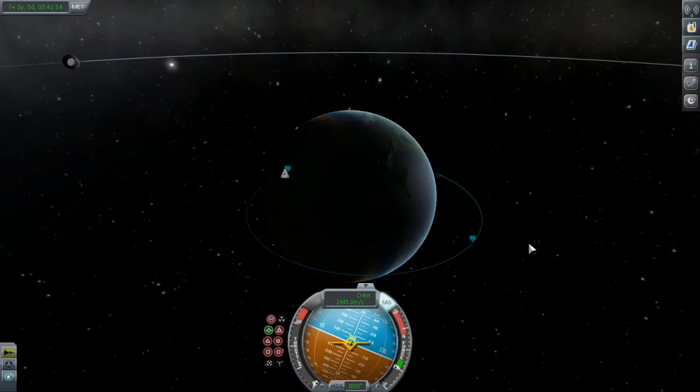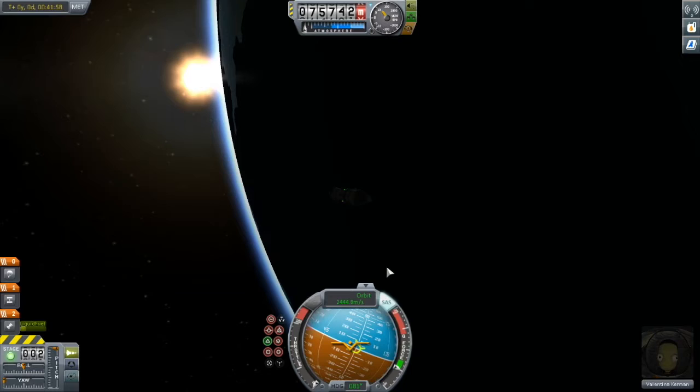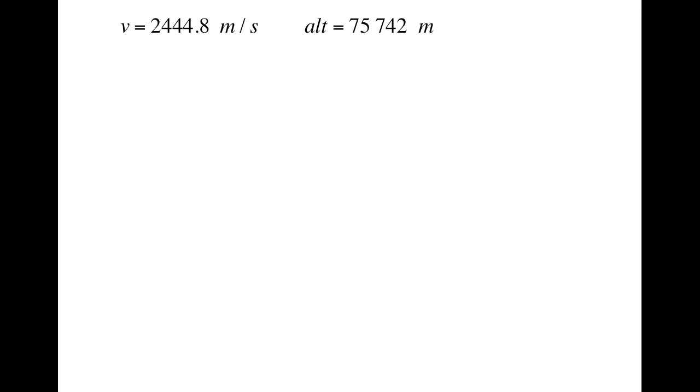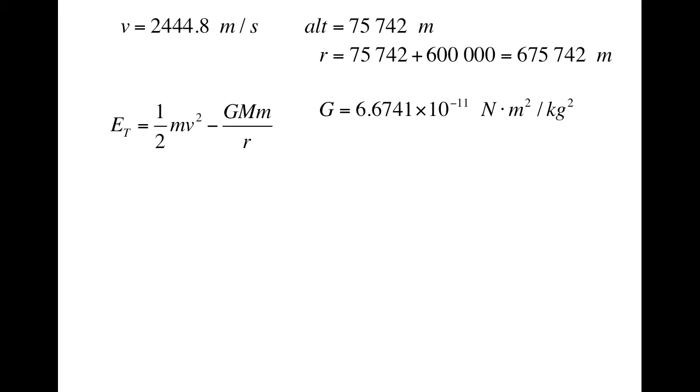Let's see this formula in action by freezing the Kerbal-1 right after it had completed the first burn in its Hohmann transfer. Right here, our velocity is 2,444.8 meters per second, and we are at an altitude of 75,742 meters. Remember that r in the formula is the distance from the center of Kerbin. Kerbin has a radius of 600,000 meters. Adding this on gives us an r of 675,742 meters. Bringing back our formula, we can see that we still need two more numbers. The universal gravitational constant is 6.6741 times 10 to the negative 11 Newton meters squared per kilogram squared. Don't worry so much about the units. And that's the same value that it is in our universe. While the mass of Kerbin is 6.2916 times 10 to the 22 kilograms.